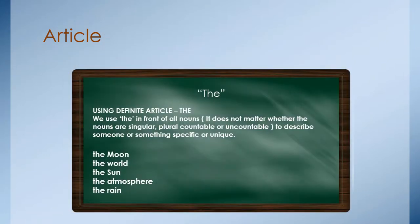THE. Using definite article THE we use THE in front of all nouns. It doesn't matter if the noun is singular or plural. If you can count or it's uncountable to describe someone or something specific or unique. So, if it's something specific or unique, you have to use the moon, the world, the sun, the atmosphere, the earth. So, if it's something specific that you're talking about, you have to use THE or THE.